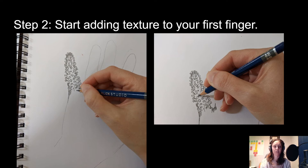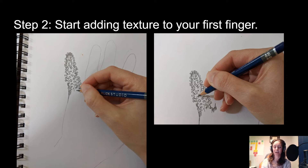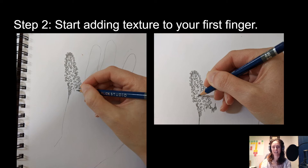Step two: start adding texture to your first finger. I looked up some different texture examples on my laptop through Google beforehand. We've all been washing our hands a lot because of COVID-19, so my hands have been feeling really rough and dry. My first texture was almost as if I had a bunch of nails or pins being shoved into my little baby finger — that's what you can see me drawing.